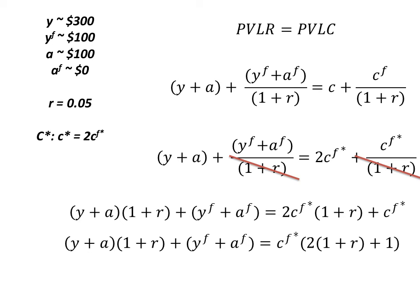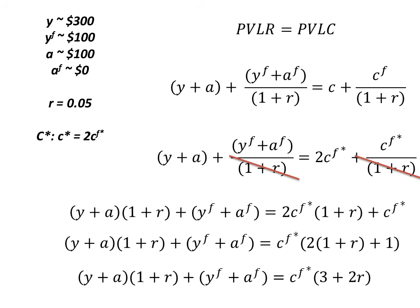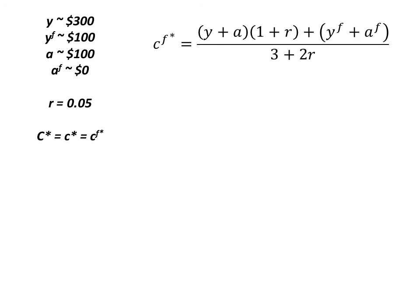We can distribute that 2 and combine like terms, and we can see that the right-hand side of this equation is going to be CF* times (3+2r). The way we get our CF* by itself is by dividing both sides by (3+2r), giving us optimal future consumption equal to Y plus A times (1+r) plus YF plus AF, all divided by (3+2r).